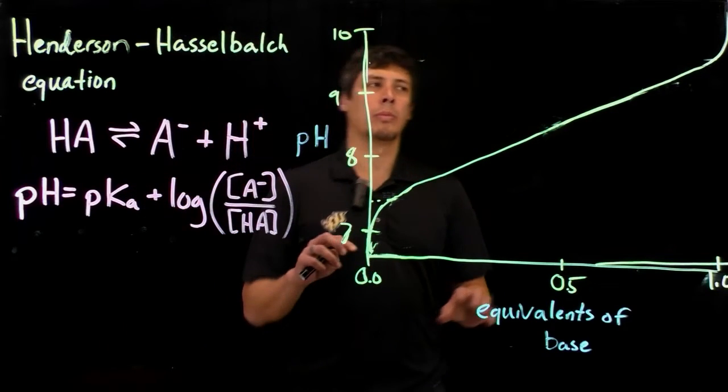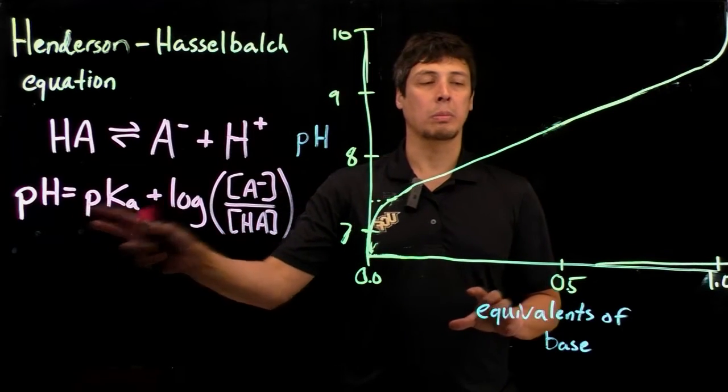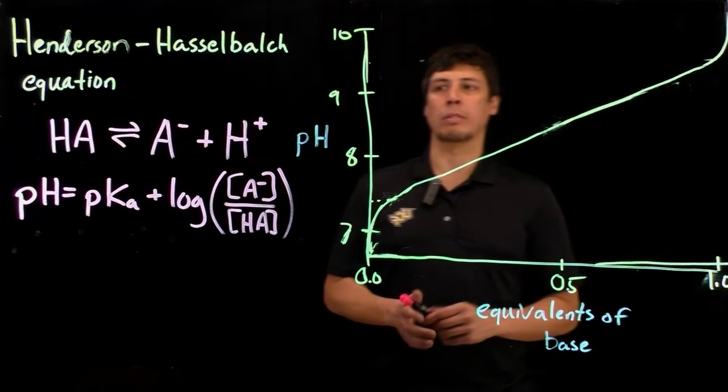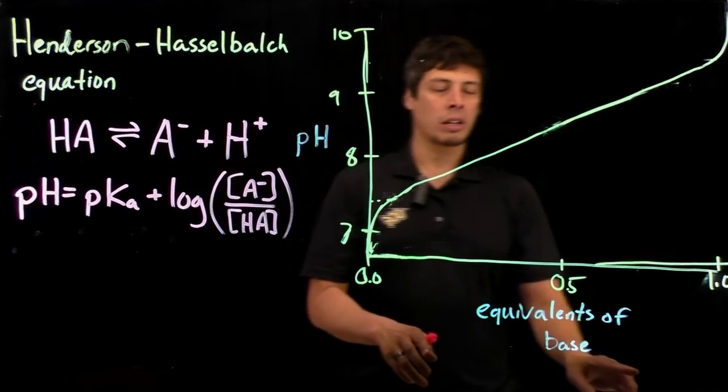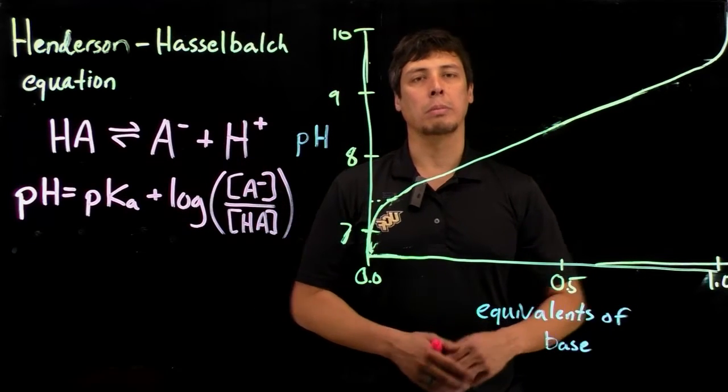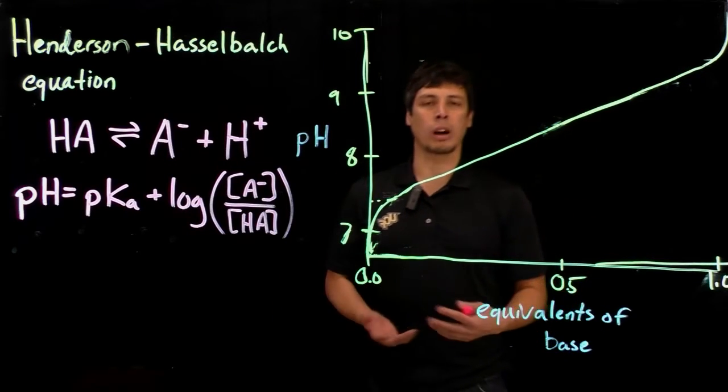We can get this information, such as the pKa, from a titration curve, where on the y-axis we have the pH, and on the x-axis we have equivalence of base, or we can plot this in concentration of hydroxide if we're titrating a base.